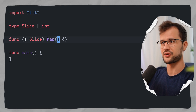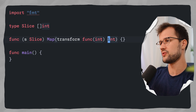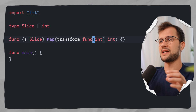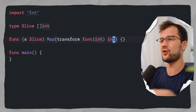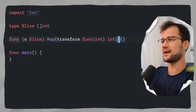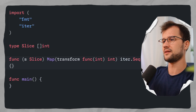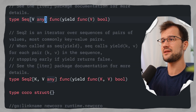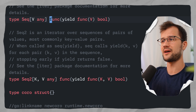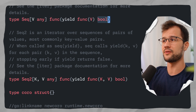In the map function, we have a transform function parameter rather than a yield function. This transform function takes in an integer and returns a new integer — that's the typical map transformation. This map function returns an iterator, which we define as iter.Seq with a generic argument of integer. If we look at this type definition, this Seq type is just a function with a yield function that has some value parameter and always returns a boolean.